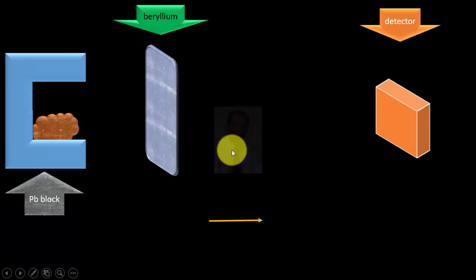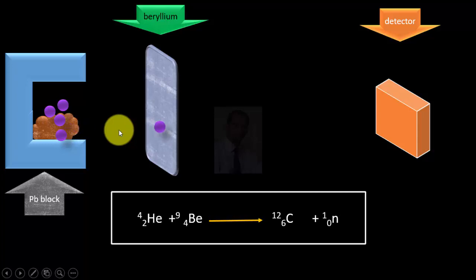So let's see what happened in this experimental setup. Here you can see, polonium is kept in this cavity and it is enclosed by lead material that is a heavy metal which blocks the radiations from going out in every direction. That's why this end is open so that the radiation could go in only one direction when beryllium material was kept in front of these radiations.